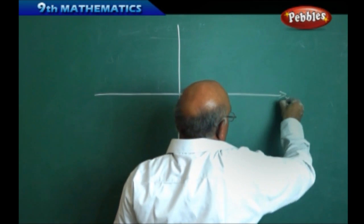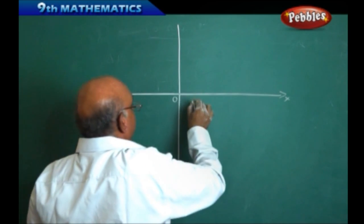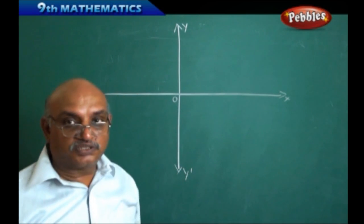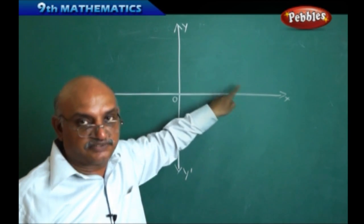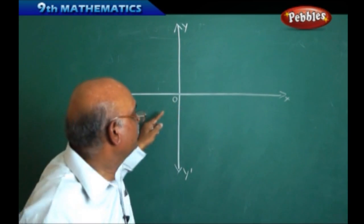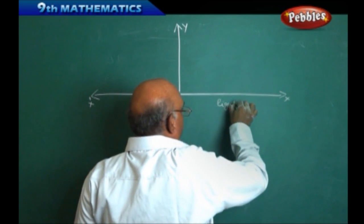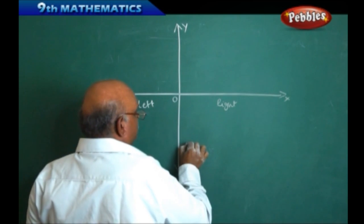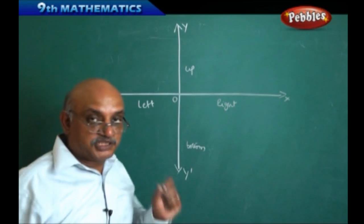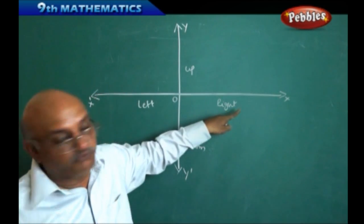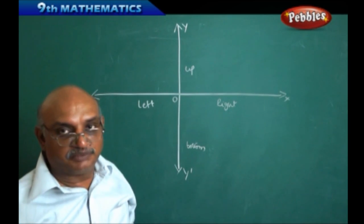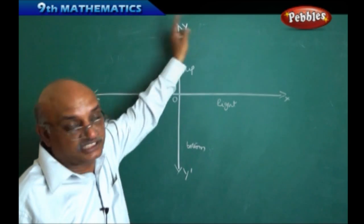Now we will observe carefully. The total universal space has been divided into 4 parts. This part is called the x-axis, this is x-dash, this is the origin, this is y, and this is y-dash. The total space has been divided into horizontal as well as vertical. The point of intersection of these two is called 0 — this is called the origin. The right side and left side of the origin, and the bottom and top directions define the space. We are calling it a 2-dimensional space.